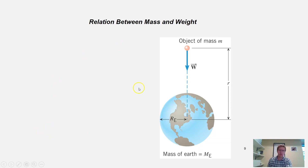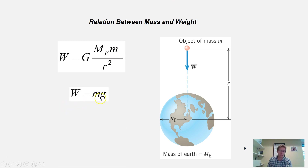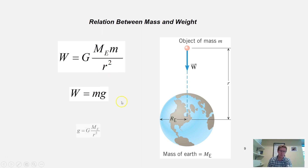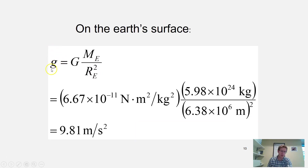Going back to weight: we've defined weight as mass times gravity. That's actually just a special case of Newton's law of gravitational attraction, using the mass of the earth and assuming you're at sea level, where r equals the radius of the earth. So the acceleration due to gravity g equals the gravitational constant G multiplied by the mass of the earth divided by the radius of the earth squared. Plugging in those numbers, you get g equal to approximately 9.81 meters per second squared.